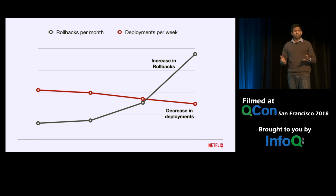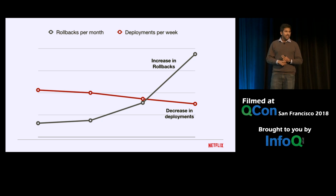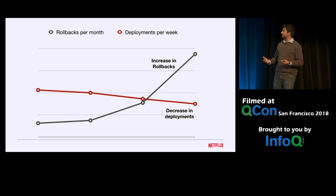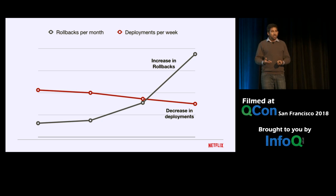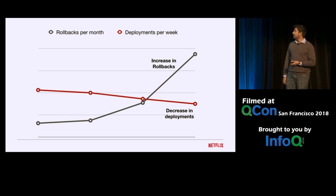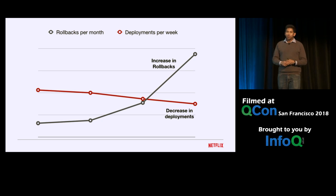Now I want you folks to imagine this. Say you own and operate this API service — a critical service orchestrating and acting as a nexus point for all requests coming into the Netflix ecosystem. On the one hand, it's increasingly becoming a bottleneck for feature velocity. And on the other hand, our availability numbers are not where we want them to be. In order to fix this, you are tasked with the responsibility of re-architecting this service. Where do you begin?